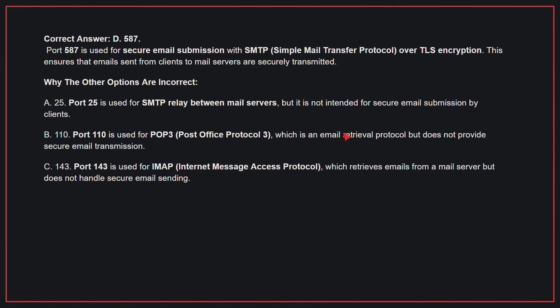This ensures that emails sent from clients to mail servers are securely transmitted. Why the other options are incorrect: A, port 25, is used for SMTP relay between mail servers, but it is not intended for secure email submission by clients. B, port 110, is used for POP3, which is an email retrieval protocol, but does not provide secure email transmission. C, port 143, is used for IMAP, which retrieves emails from a mail server, but does not handle secure email sending. Therefore, the correct answer is D, 587.